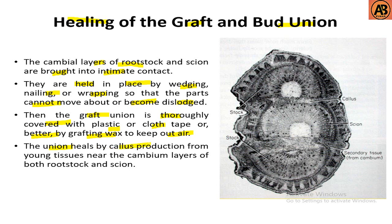The union heals by callus production from young tissues near the cambium layers of both rootstock and scion. Here you can see the cleft grafting — this is the rootstock, this part is the scion, and this part is the cambium. Callus formation occurs, then xylem and phloem are generated.